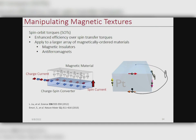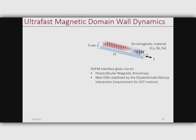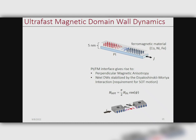The canonical system used to study domain wall dynamics for a number of years is really an all-metallic system — quite elemental in nature. We use a spin-orbit-coupled material like platinum with usually an elemental ferromagnetic metal like cobalt, nickel, or iron. This system has a number of advantages: the interface gives rise to perpendicular magnetic anisotropy, which is great for scaling and efficiency. Importantly for domain wall dynamics, this interface also gives rise to a strong Dzyaloshinskii-Moriya interaction, or DMI, which stabilizes chiral Néel domain walls, a necessary ingredient for spin-orbit torque-driven domain wall motion.